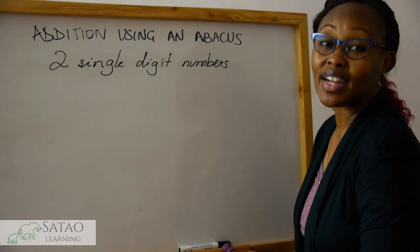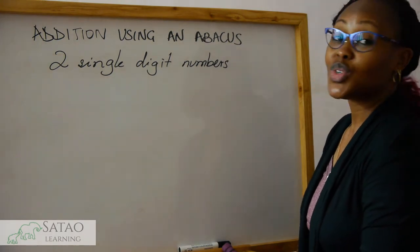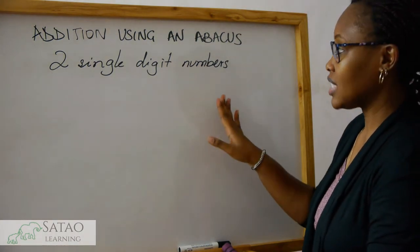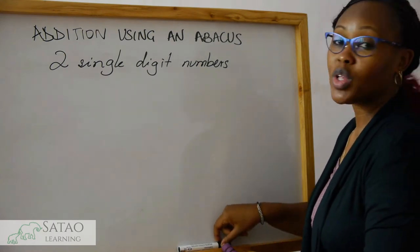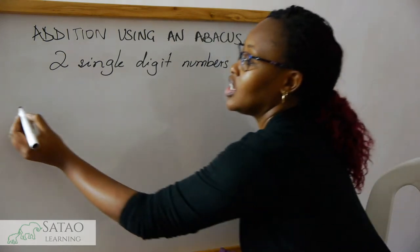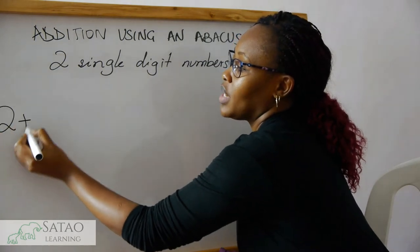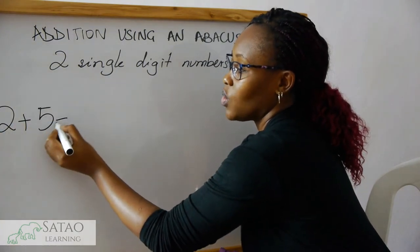Hello boys and girls and welcome to SATAO Learning. Today we are going to use an abacus to add two single digit numbers. For example, if you're given a sum like two plus five equals...